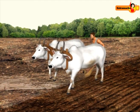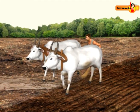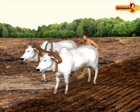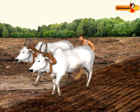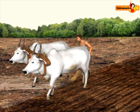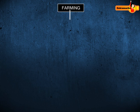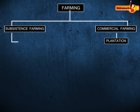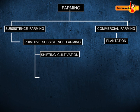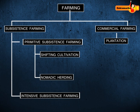Subsistence type of farming is practiced to meet the needs of the farmer's family. It can be further classified as primitive subsistence farming and intensive subsistence farming.